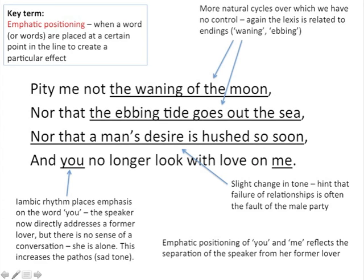In the second quatrain she begins by saying 'pity me not the waning of the moon, nor that the ebbing tide goes out to sea.' So she's referring to more natural cycles over which we have no control — we can't control the fact that the moon changes or that the tide goes out to sea. The lexis here is always relating to endings: she's talking about the waning of the moon, not the waxing, and the ebbing tide going out, not coming in. All the way through she focuses on cycles but only ever the end of those cycles, which increases the melancholic tone of the poem.